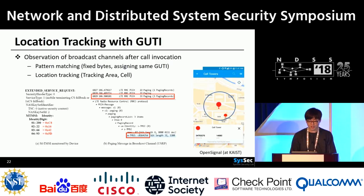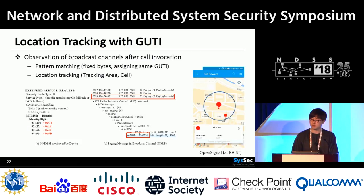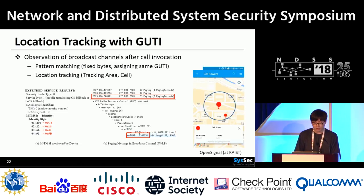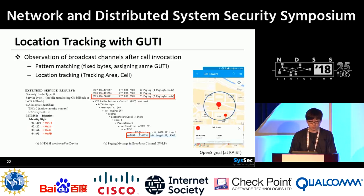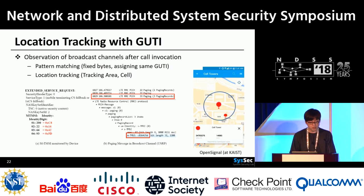This is pretty useful when I want to check if my advisor is at school or not. Using this attack, I checked if Yongdae is at KAIST. These captured messages are observed in device and broadcast channels respectively. Once I know the operator of Yongdae's mobile device and phone number, the Korean operator's paging policy, and location of base stations — using open source databases such as OpenSignal and Google's geolocation API for cell ID and tracking area code — I was able to check Yongdae's location.